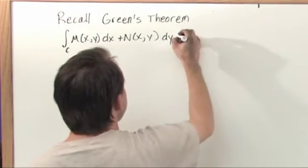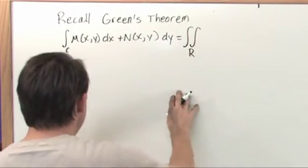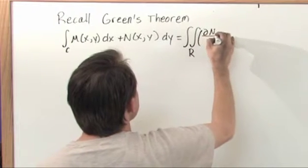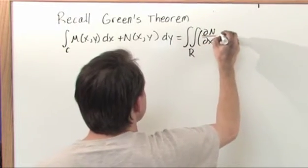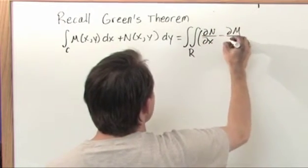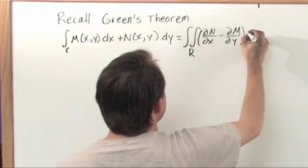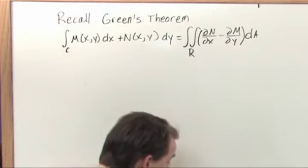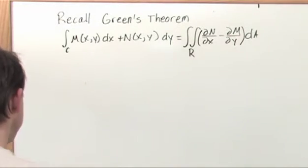And Green's Theorem basically said that that is exactly equal to integrating over a region R, and I'll remind you what that is in a second. Partial of n with respect to x minus partial of m with respect to y, and it's an area integral, a double integral, because of the region R there.